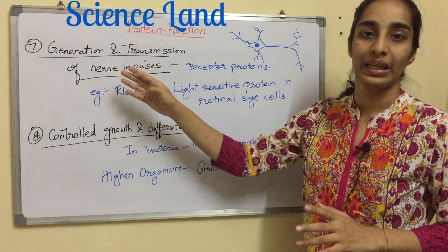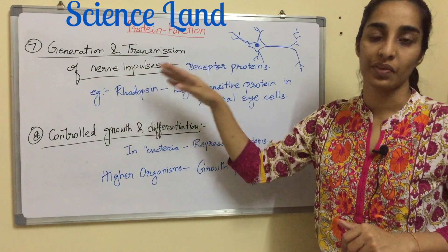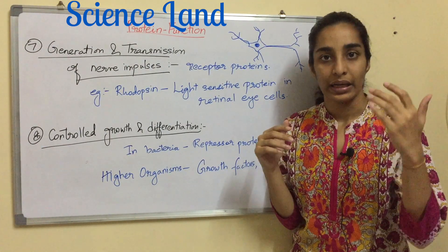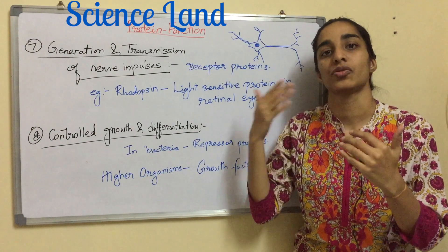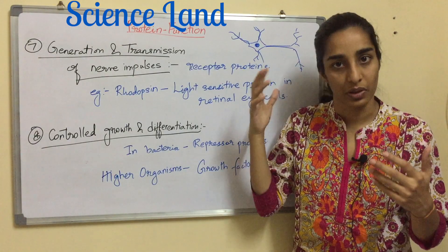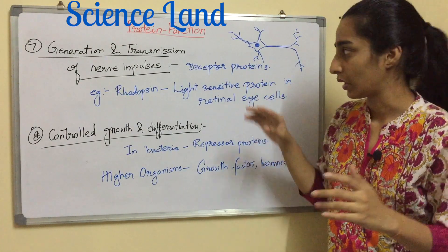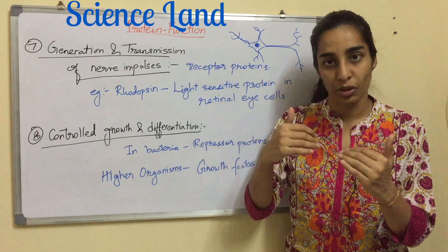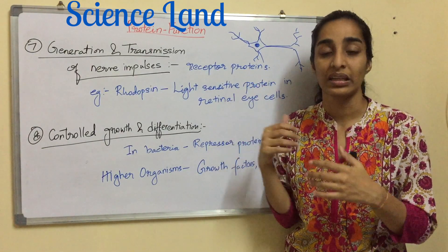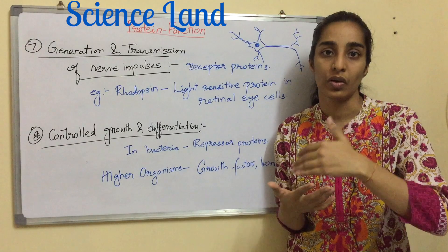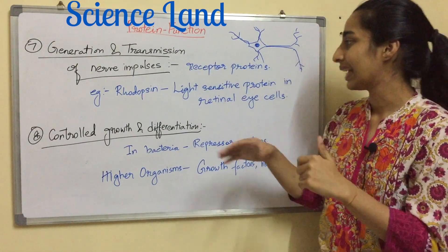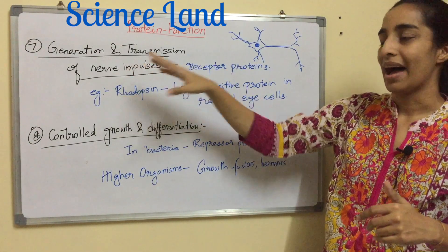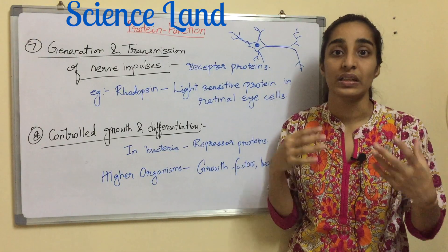The seventh function of protein is generation and transmission of nerve impulses. Two neurons have something known as synapses. A stimulus is passed through one nerve and transmitted to another, and the message is delivered to the brain. There are certain receptor proteins present on these nerves. A molecule like acetylcholine comes into picture and the receptor proteins are triggered by it, thus facilitating the transmission of the nerve impulse. Another example is rhodopsin — a light-sensitive protein in the retinal eye cell. All these have roles in generation and transmission of certain impulses.